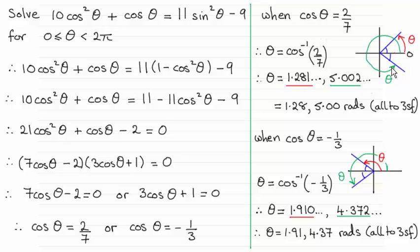To get the green one here we know that these two angles are exactly the same, they're 1.281 radians. So therefore to get the green one all I do is 2 pi radians for a full turn minus 1.281 radians, and that gives me 5.002 and so on radians. And then just round up your answers.